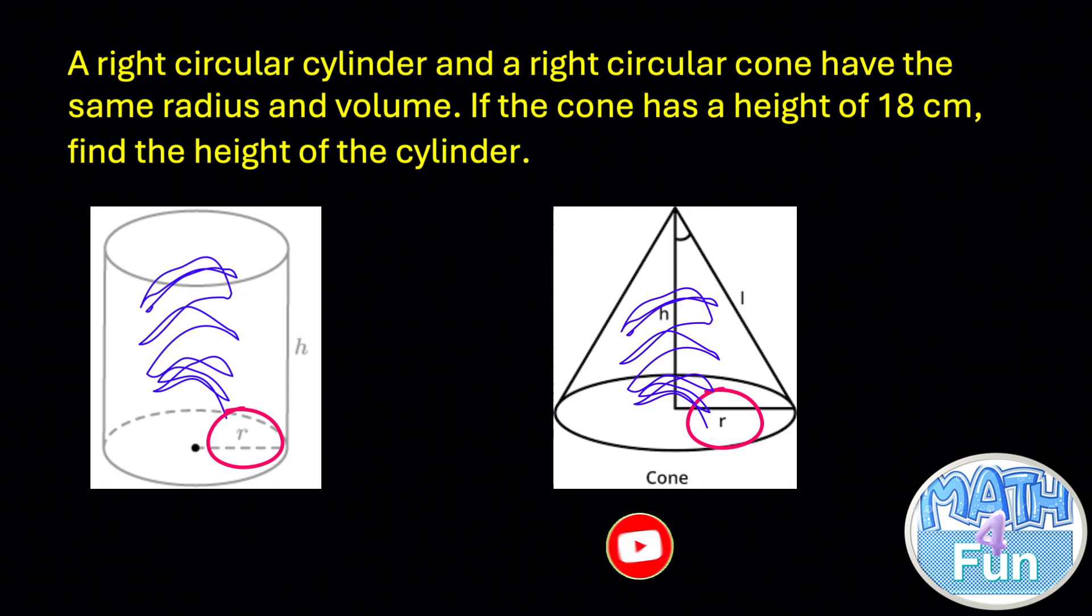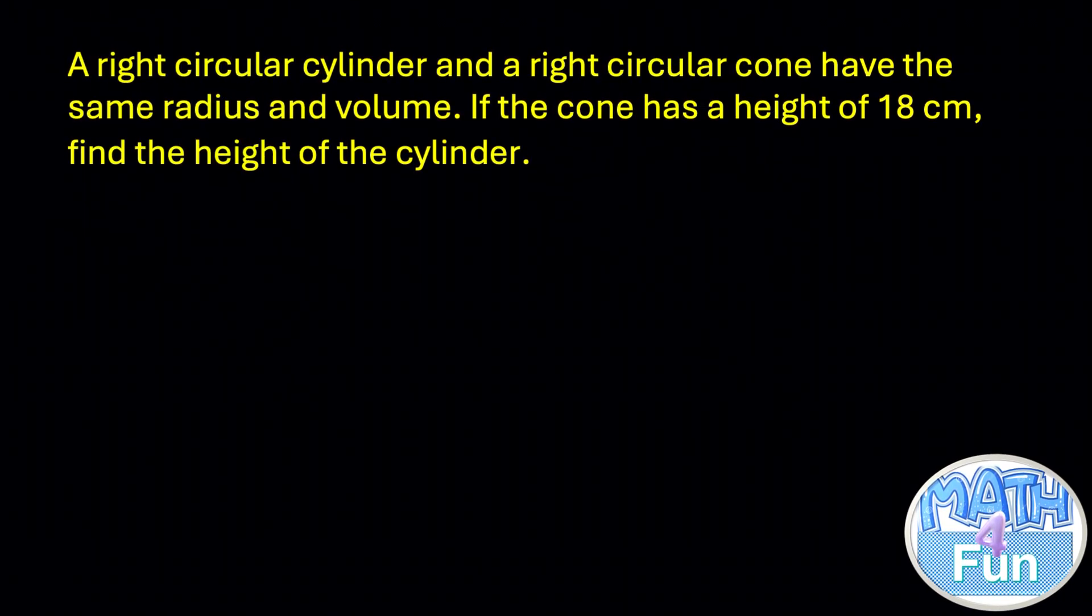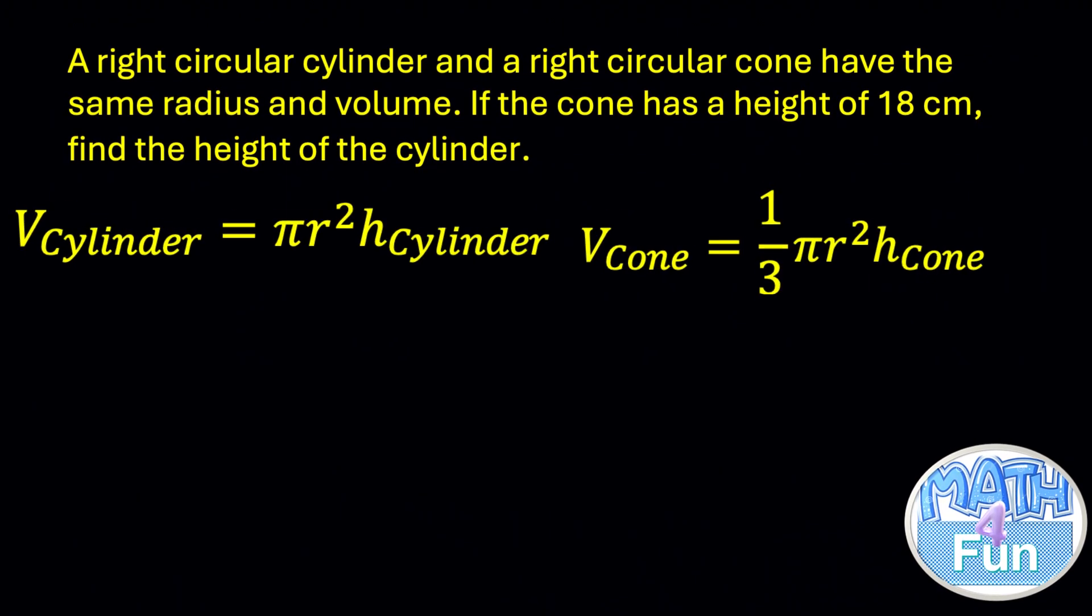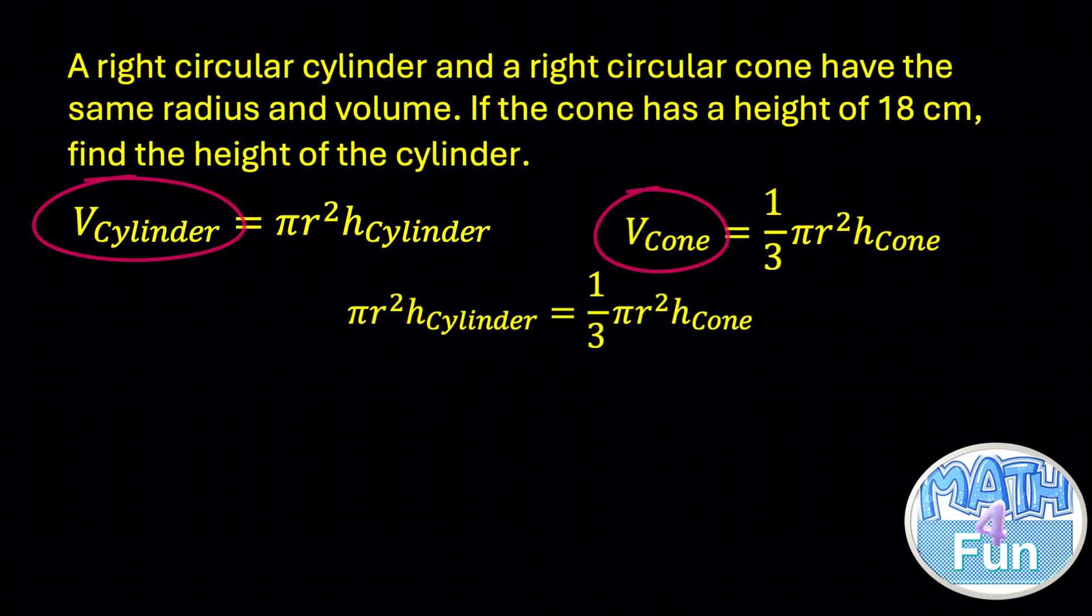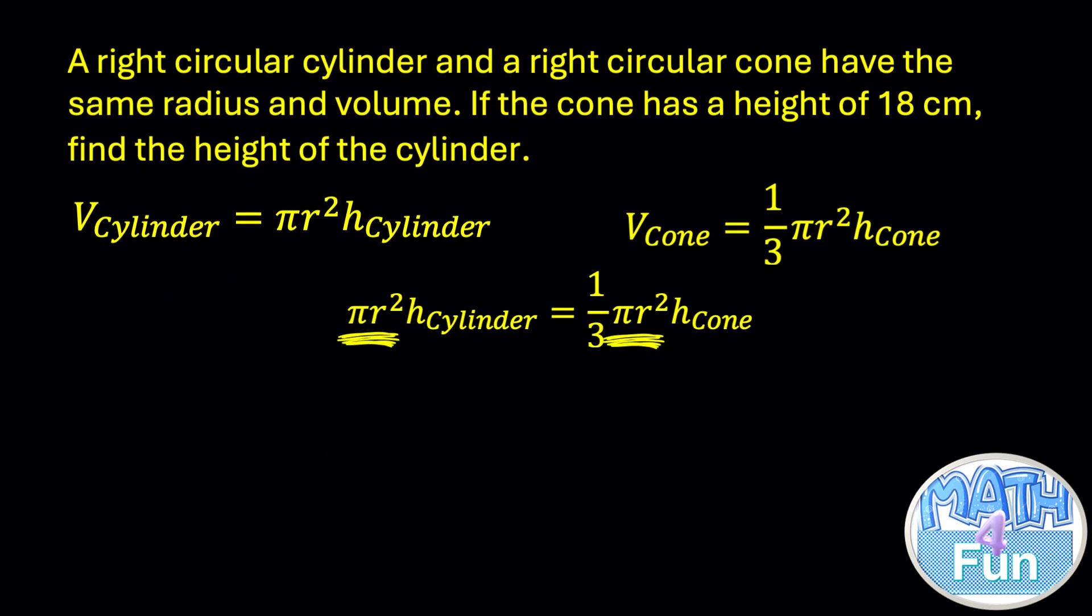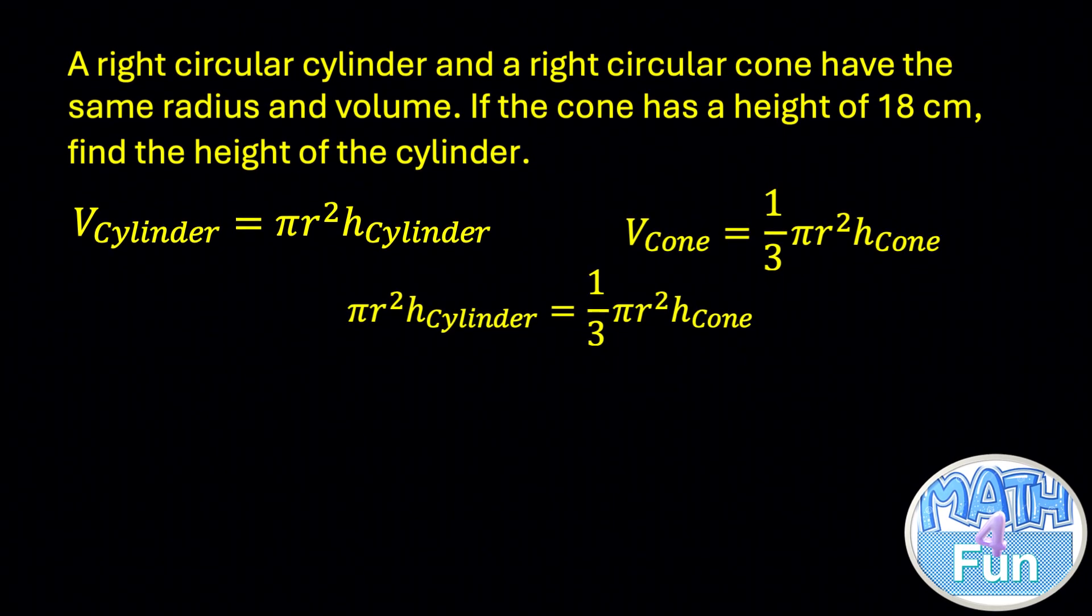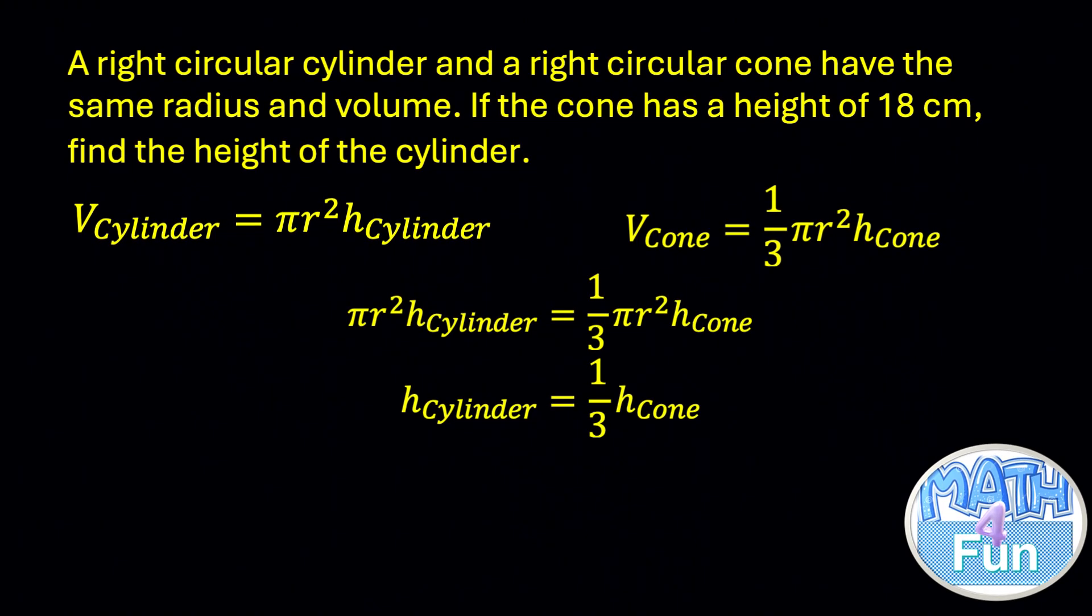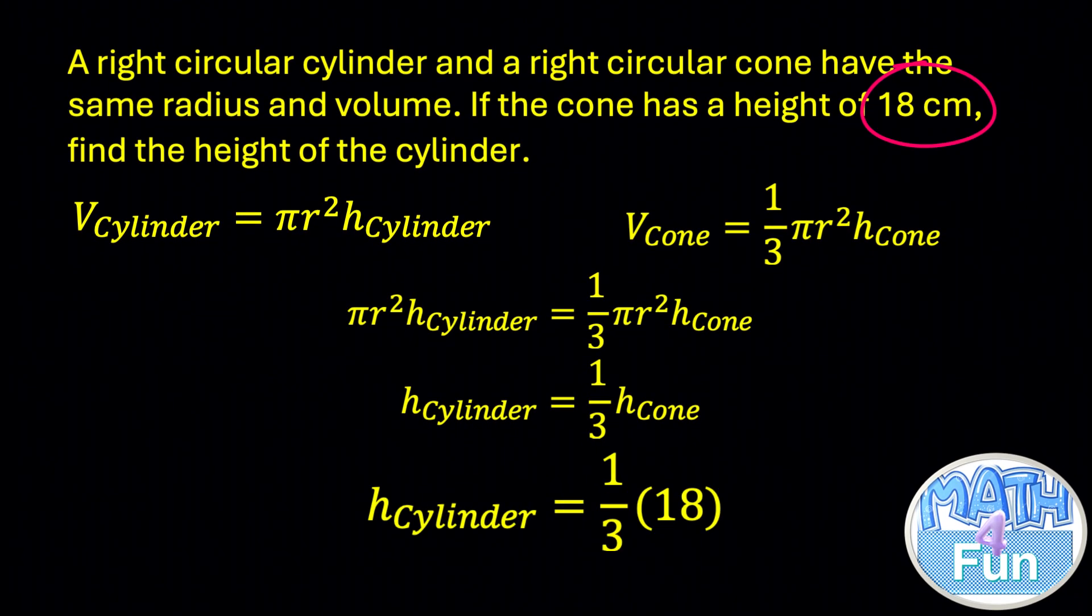Now let's denote the radius of both the cylinder and the cone as r. Given that the volumes are equal, we have πr²h for the cylinder is equal to 1/3 πr²h for the cone. You can cancel πr² from each side because the radius is the same and π is the same. Then we get h of the cylinder is equal to 1/3 the h of the cone. Given the height of the cone is equal to 18 centimeters, replace it here and multiply by 1/3, you get 6.